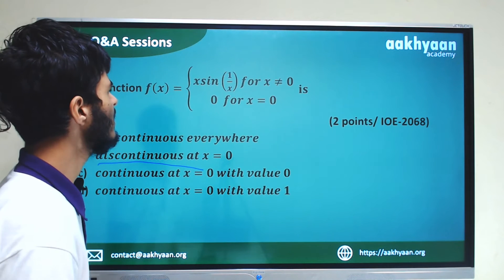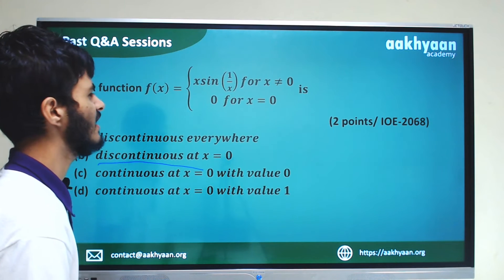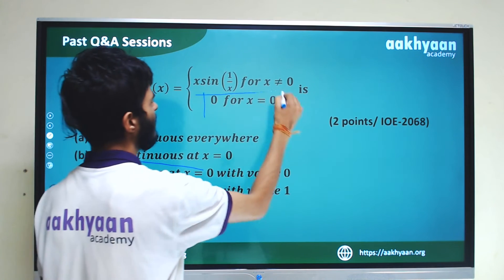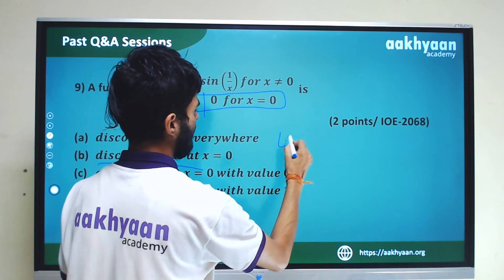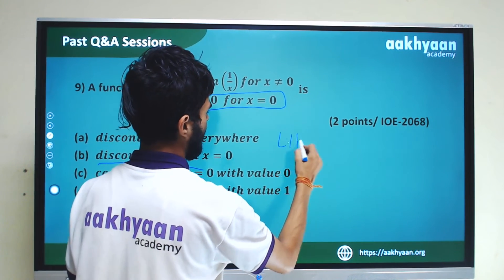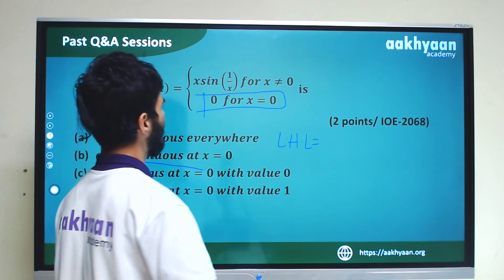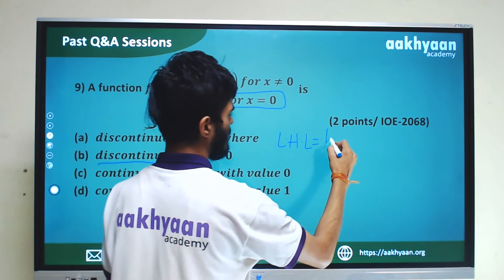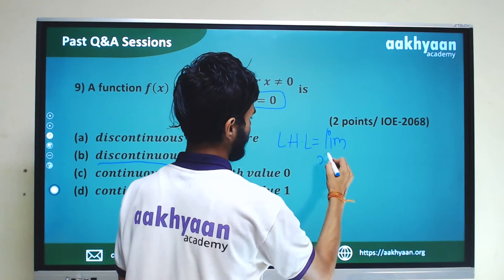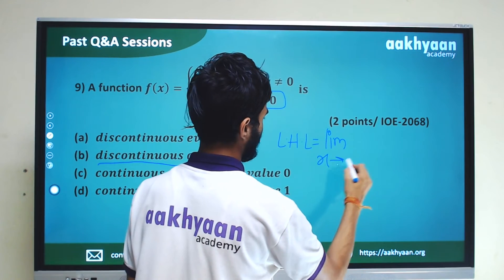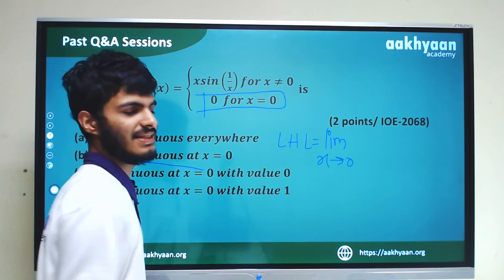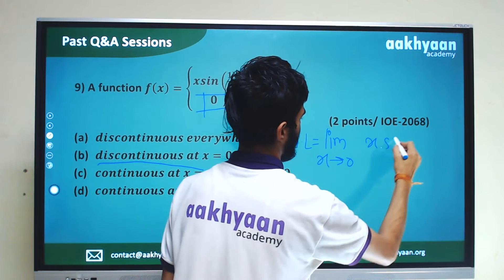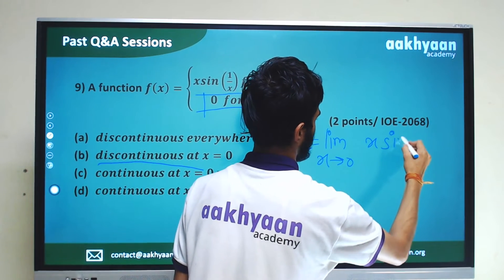We check: the function value at x equal to 0 is 0. We evaluate the left limit and right limit, both giving limit x tends to 0 of x·sin(1/x).